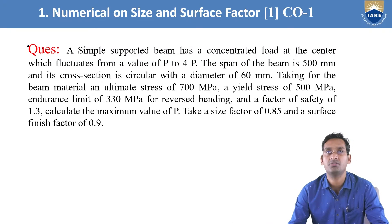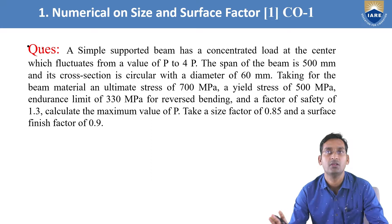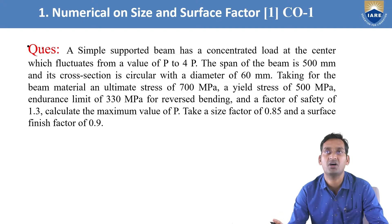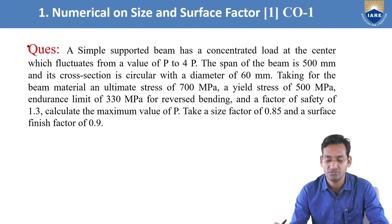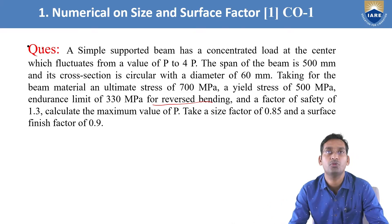The first question: a simply supported beam has a concentrated load at the center which fluctuates from a value of P to 4P — meaning the range is from P to 4P. The span of the beam is 500 mm and its cross section is circular with a diameter of 60 mm. The ultimate stress is 700 MPa, yield stress is 500 MPa, endurance limit sigma_e is 330 MPa for reverse bending, and factor of safety is 1.3. Calculate the maximum value of P.